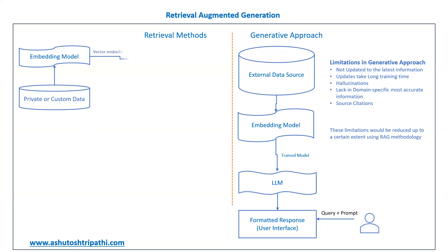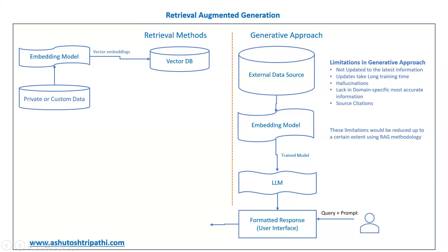You pass the private or custom data through embedding models, which generate vector embeddings. These vector embeddings are stored in a vector database. In retrieval methods, the vector DB is the famous storage system because search is very fast and context-based similarity matching is very efficient. For example, you might be training a bot on your HR policies — all documents related to those policies are stored in the vector DB.